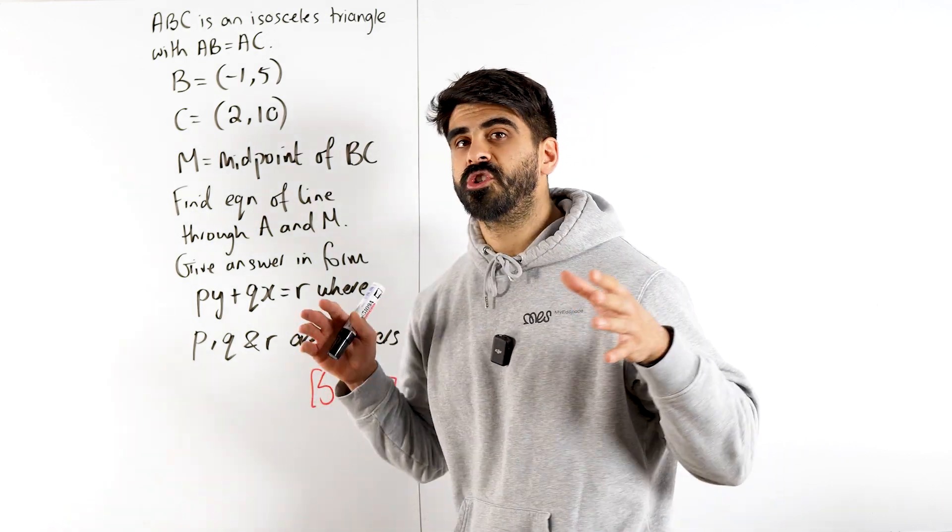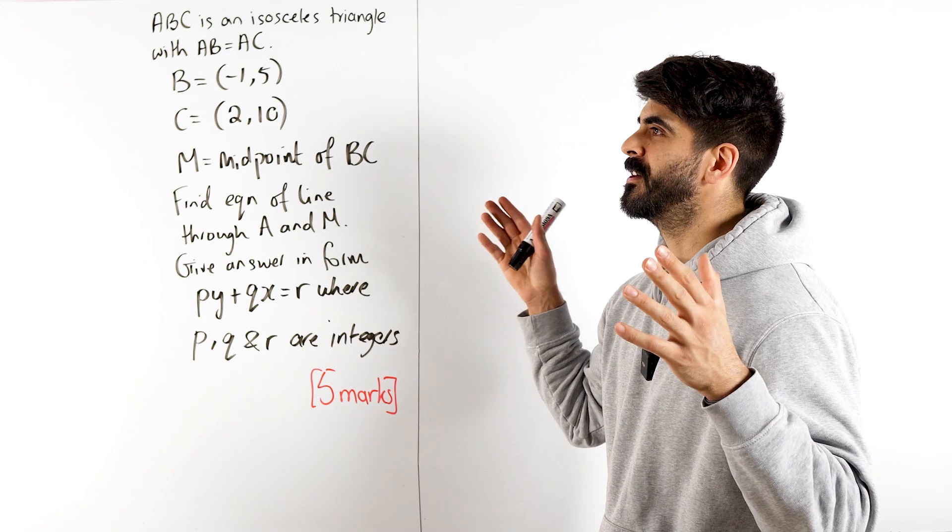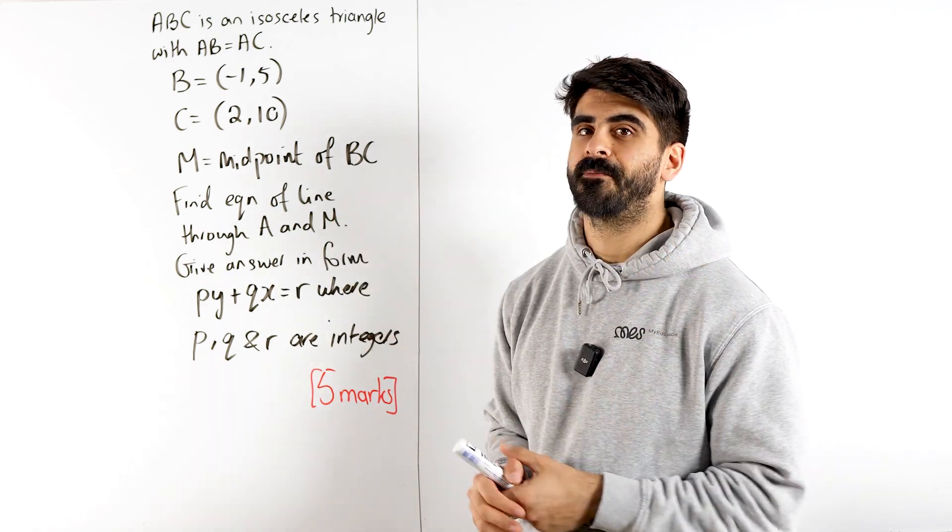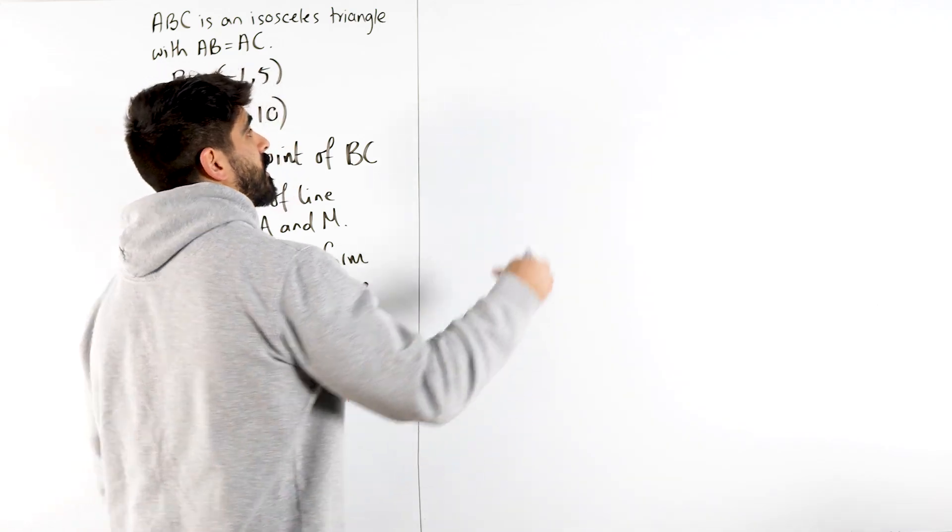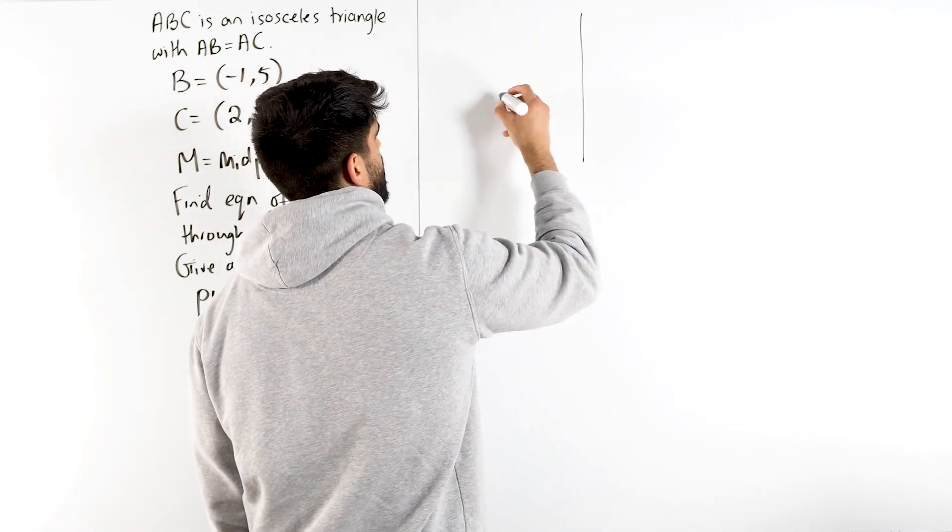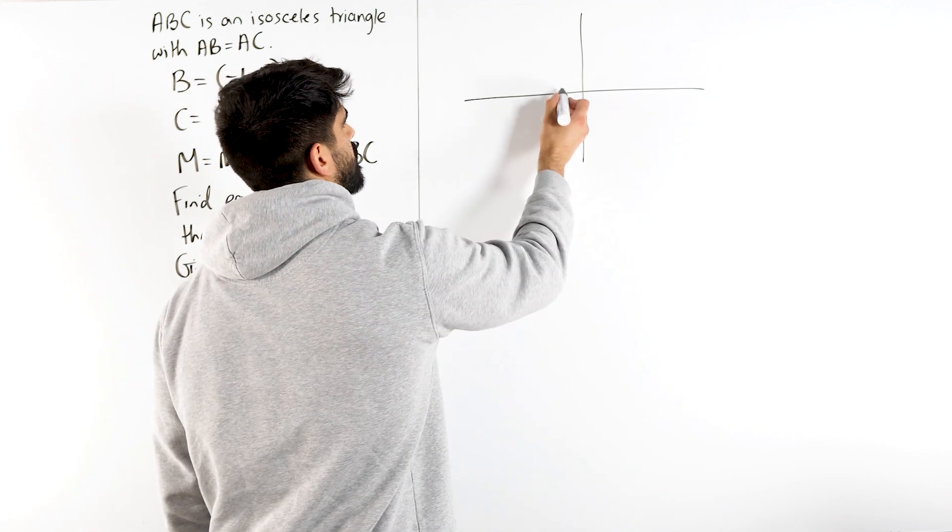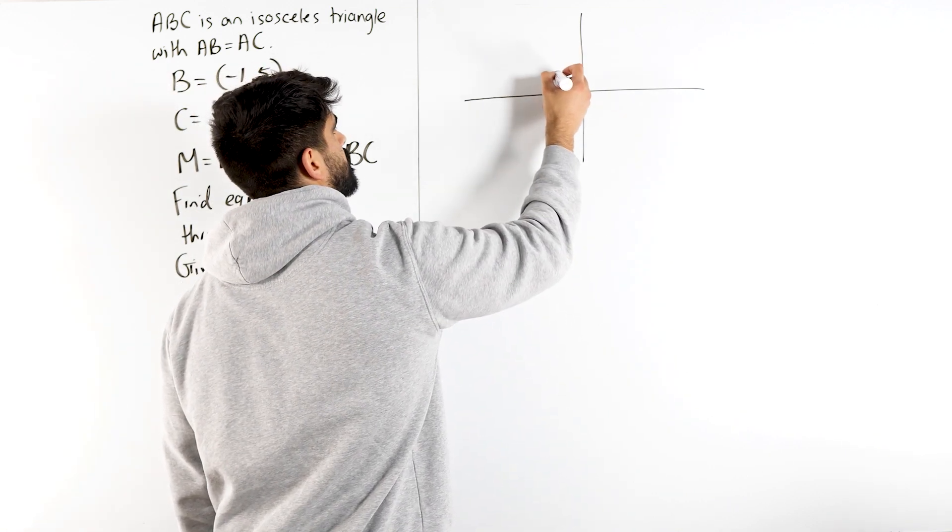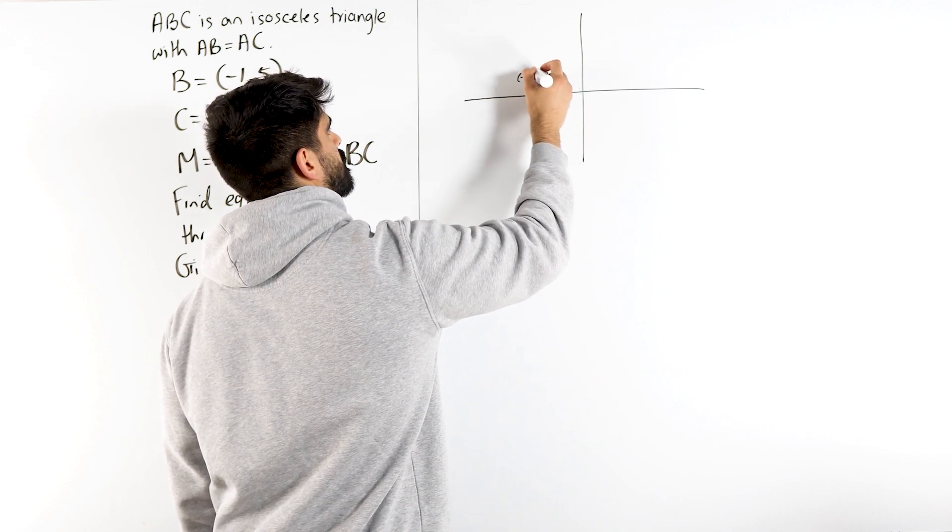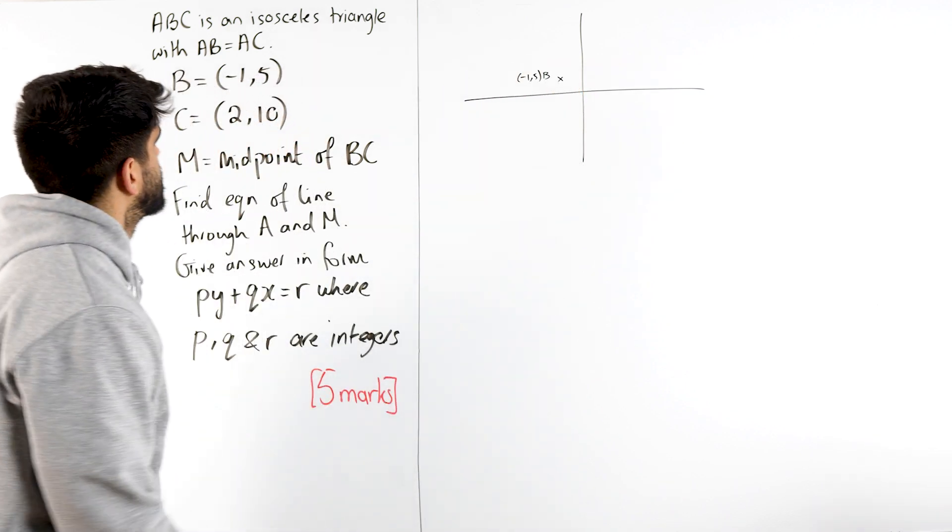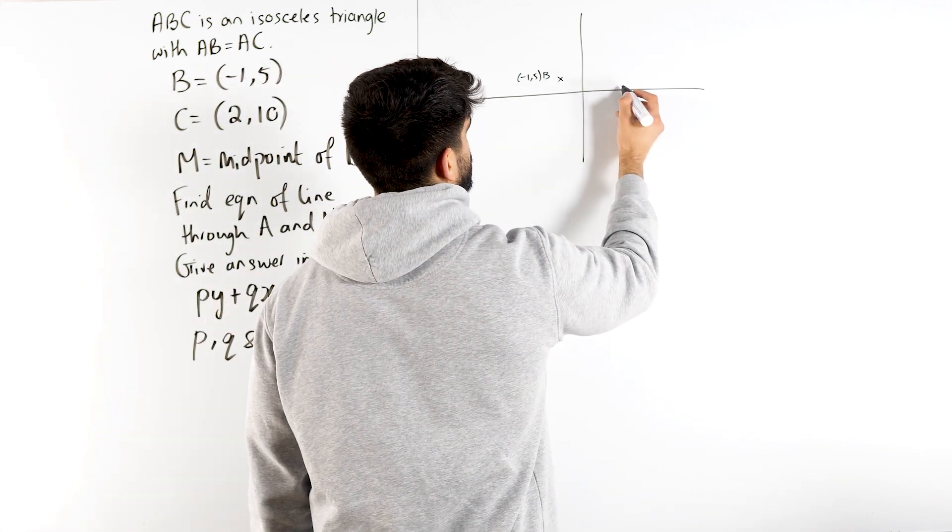Now with any coordinate geometry question, you're going to want to draw a diagram. So if it's tricky, draw a picky. So we could just do a standard X, Y axis. We have B is at minus 1, 5. Say like here, minus 1, 5, that's B. And C is at 2, 10. So say 2, 10.